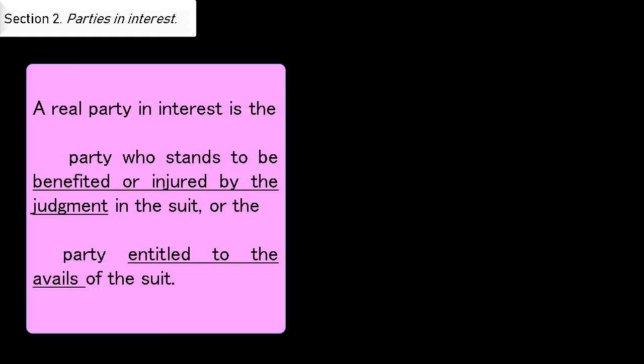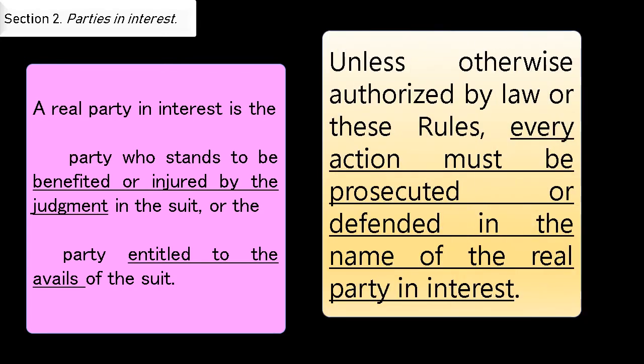Section 2 is about parties in interest. In civil action, there are four kinds of parties: the real party in interest, the representative party, the indispensable party, and the necessary party. A real party in interest is the party who stands to be benefited or injured by the judgment in the suit, or the party entitled to the avails of the suit. Unless otherwise authorized by law or these rules, every action must be prosecuted or defended in the name of the real party in interest.